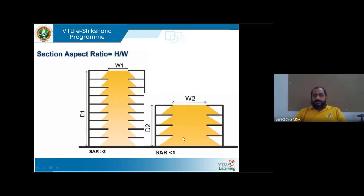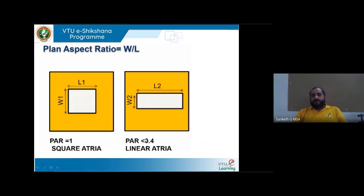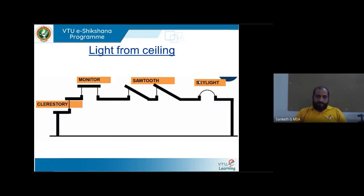The section aspect ratio is a thumb rule: the ratio of the opening width of a skylight or atrium to its depth. If less than 2, it is considered narrow and lower floors may not receive efficient daylighting. If the ratio of opening width to depth is less than 1, good skylight reaches most floors of the building. The plan aspect ratio applies to courtyards: a ratio of 1 gives a square atrium; a ratio less than 0.4 gives a linear atrium, both being efficient forms for daylighting.